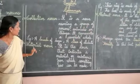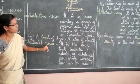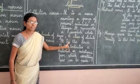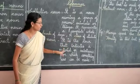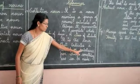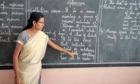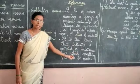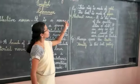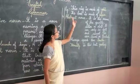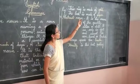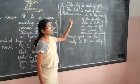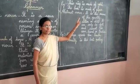So material noun is a noun that indicates a material or substance from which something new can be made. Examples: this ring is made of gold; the book is made of paper.